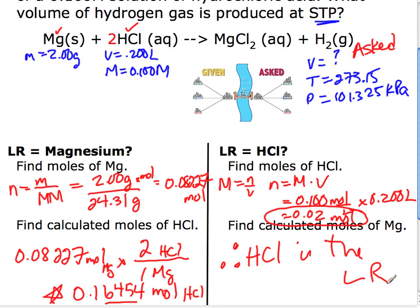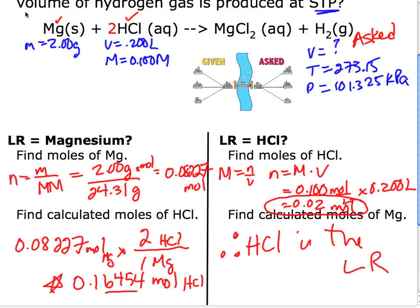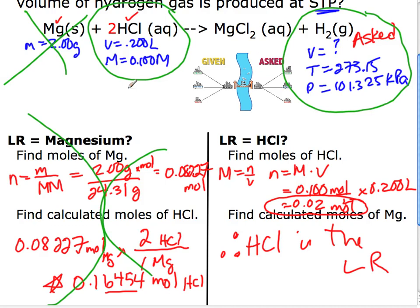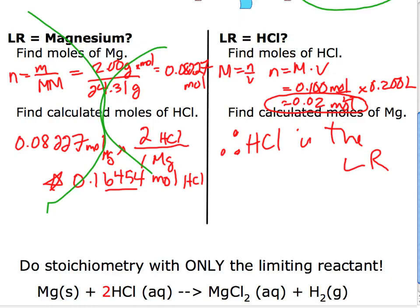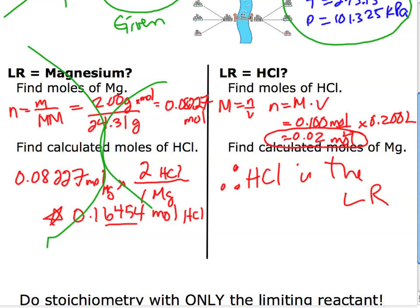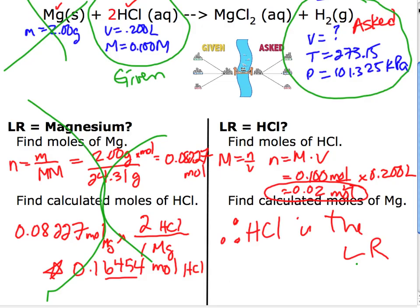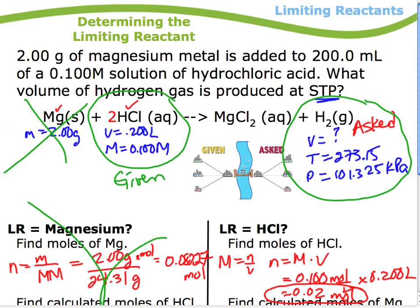Once I've determined that HCl is the limiting reactant, then I forget all about magnesium. Forget all about this stuff. I'm just focused on this, and I'm focused on that. So, this is my asked. This is my given. And now, all I have to do is do stoichiometry like I usually do. And I've given you lots of examples of how to do stoichiometry. So, I won't actually do the stoichiometry. But, that's all you do now. So, I've determined that HCl was the limiting reactant. Therefore, it's my given information. I need to find out the asked. Do stoichiometry like usual.